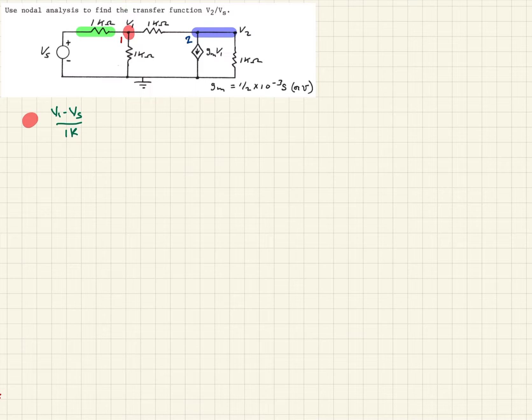The next one we want to look at, that's just going to be V1 over 1k. And then finally, we're going to look at this leg here. That'll be plus V1 minus V2 over 1k. That accounts for all of the paths in and out of that node, so we should be able to set those equal to zero. There's our first nodal equation.